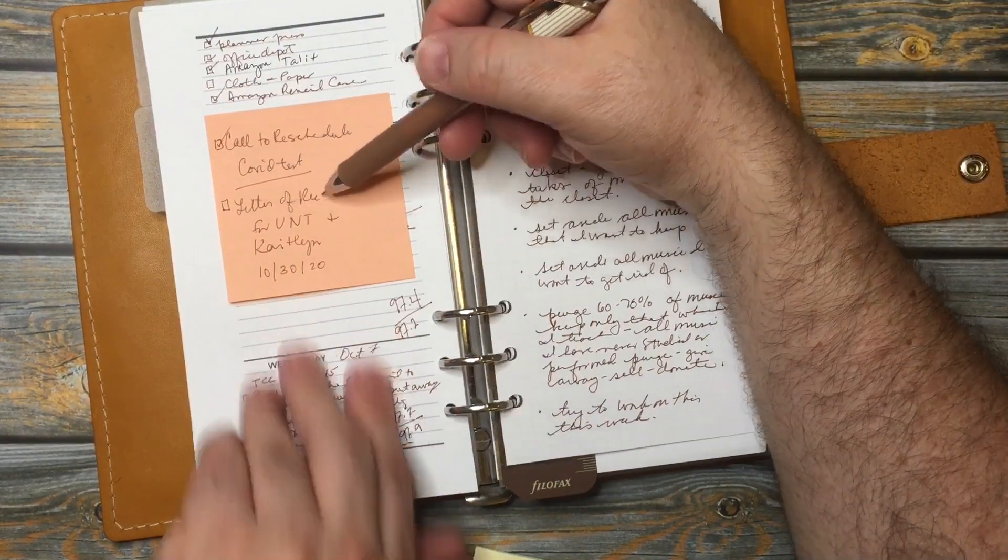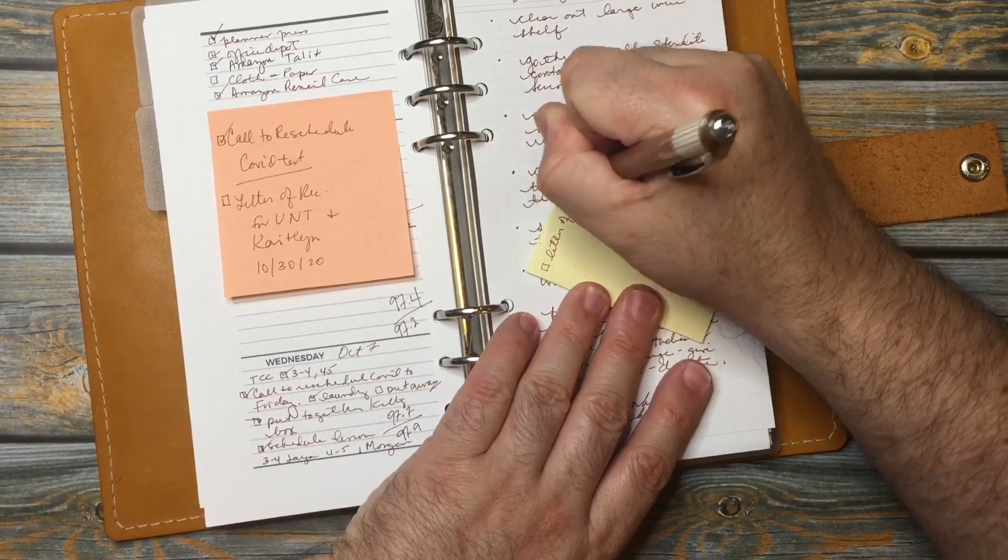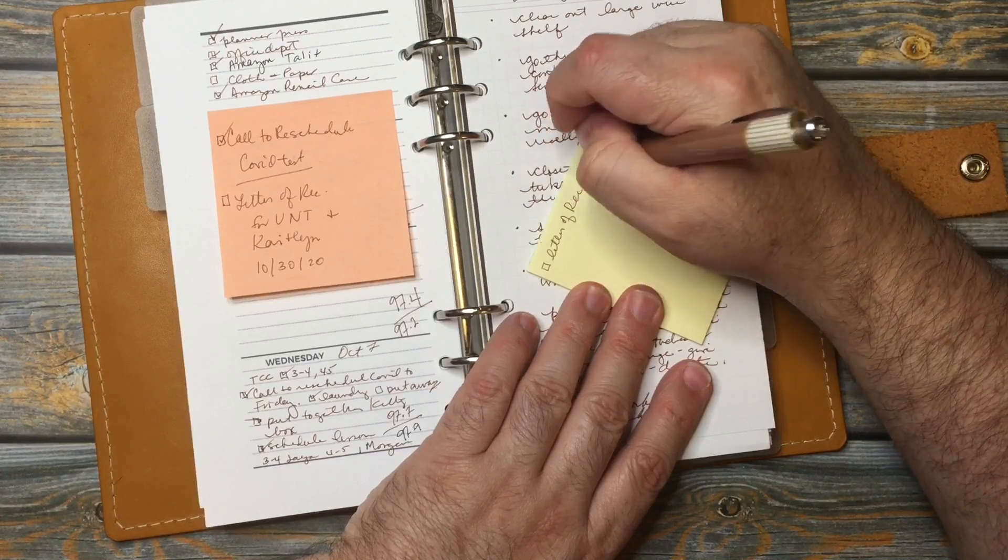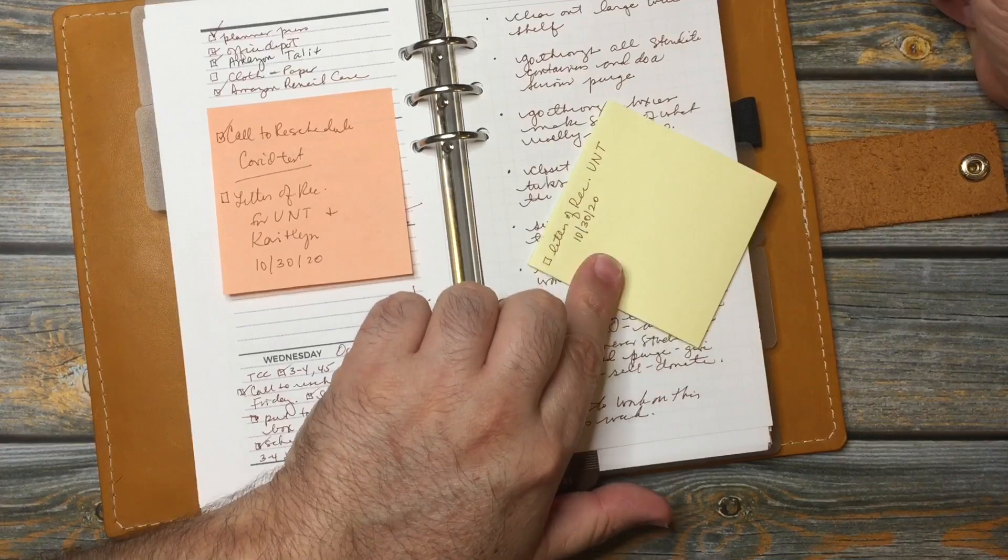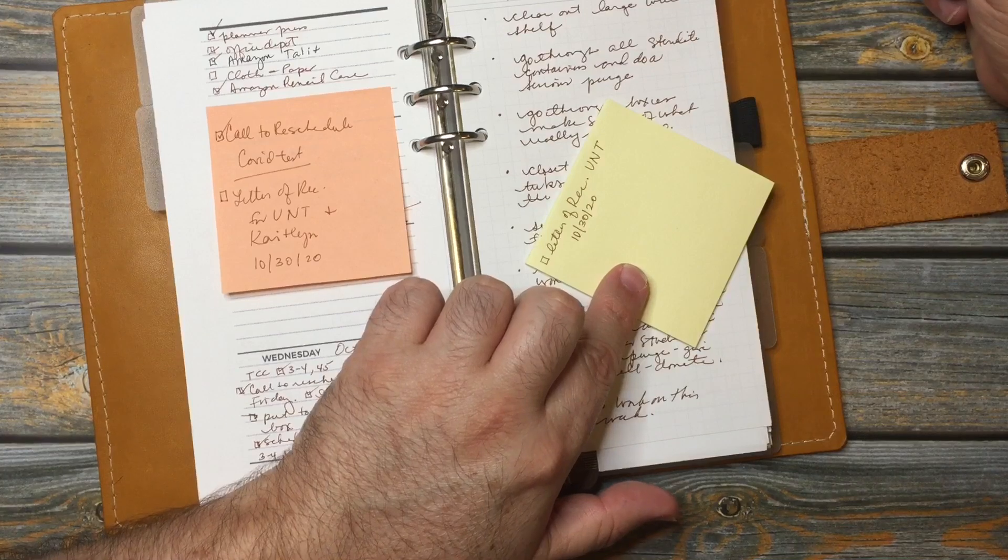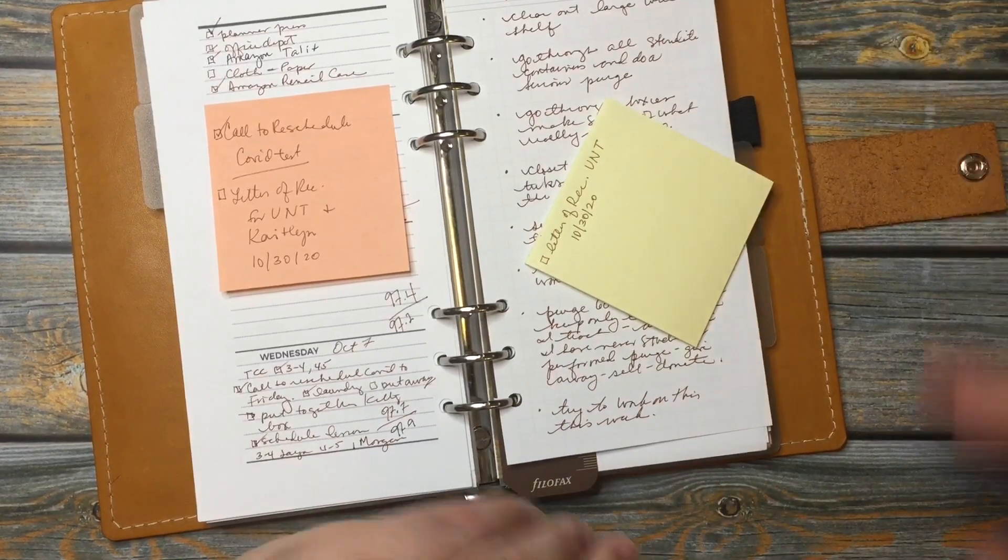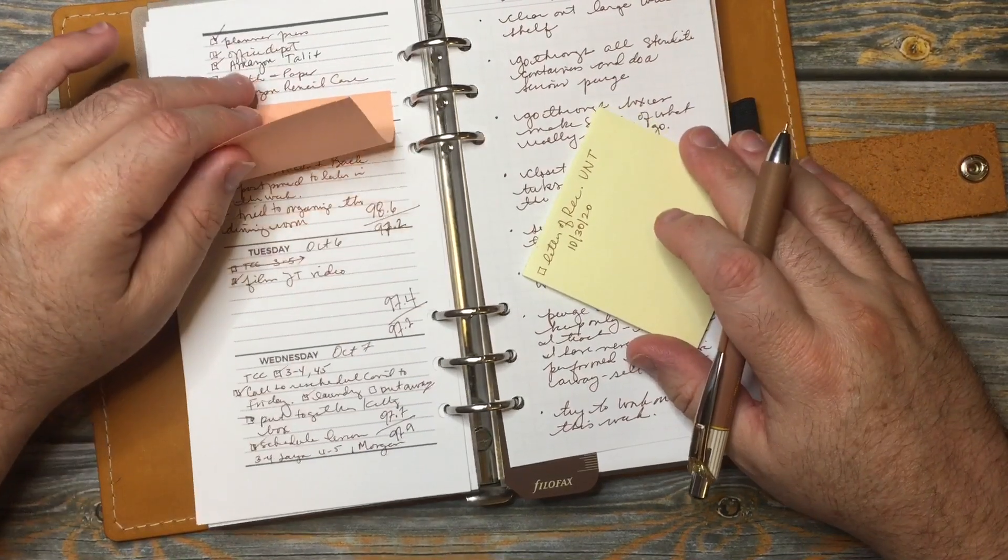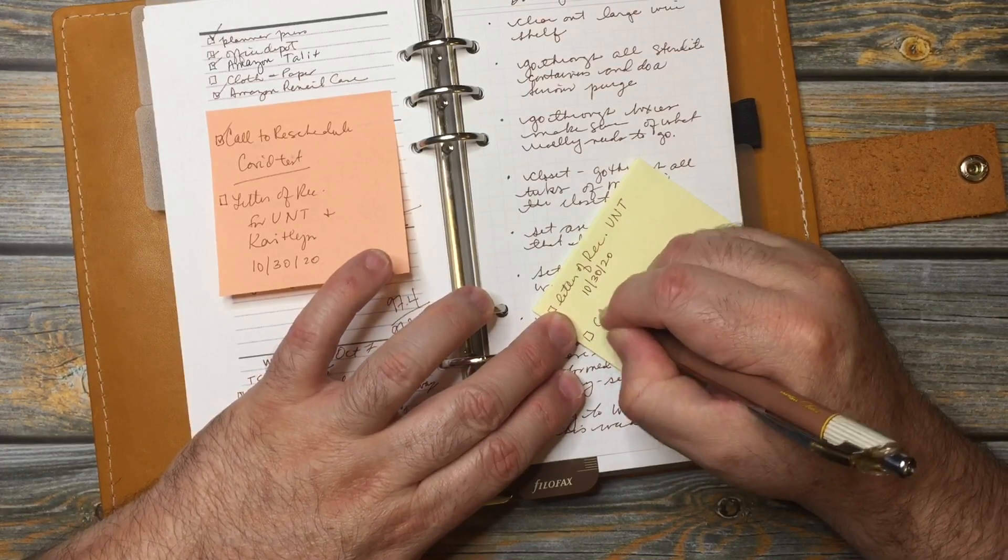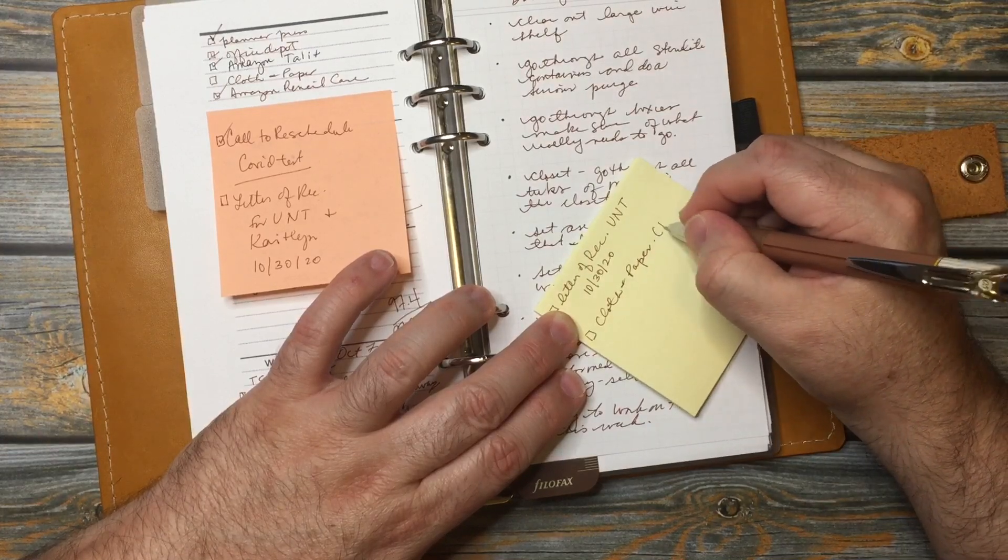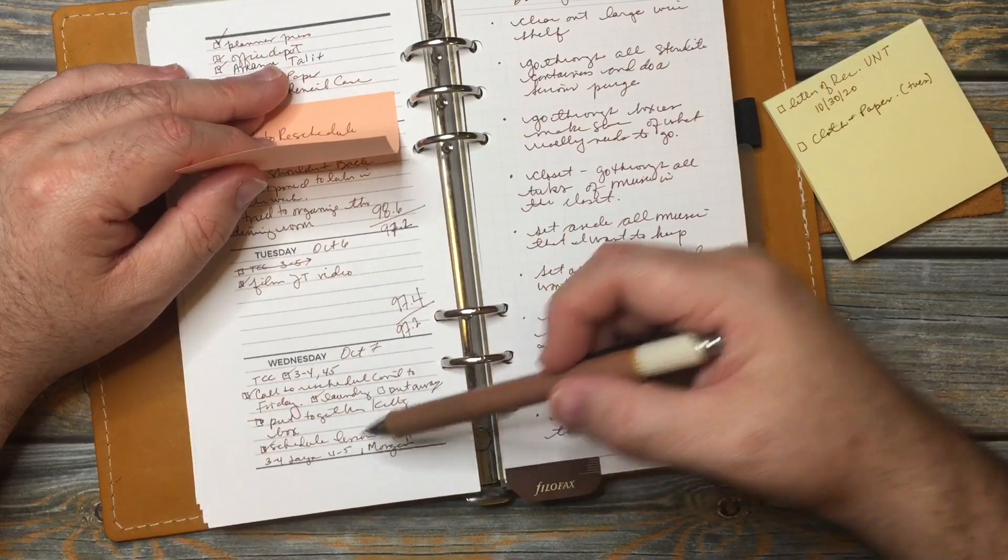I have a letter of recommendation for a student for the University of North Texas. And the due date of that is October 30th, 2020. I probably won't do that this week due to the amount of practicing I need to do, my teaching, and my rehearsal schedule. With all of that, that means extra arrival time because we have to sign in and temperature and all that type of stuff. So it adds to my time that I needed to be there. I might as well do this too. Cloth and paper, I think it's arriving on Tuesday. I'll have to check.